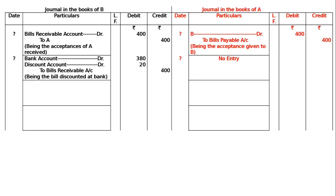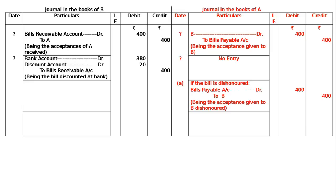Case 1 — Dishonored on the due date. In the books of A, if the bill is dishonored: Bills Payable account is debited to B, being the acceptance given to B dishonored — Rs.400 debit and Rs.400 credit. No noting charges. This is the reverse of entry number 1.